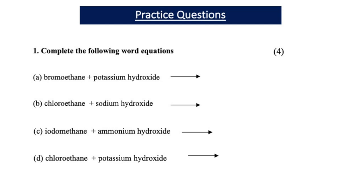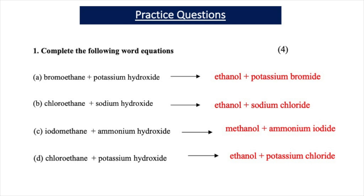Practice question 1 asks you to complete the following word equations. 1A: bromoethane and potassium hydroxide produces ethanol and potassium bromide. 1B: chloroethane and sodium hydroxide produces ethanol and sodium chloride. 1C: iodomethane and ammonium hydroxide produces methanol and ammonium iodide. 1D: chloroethane and potassium hydroxide produces ethanol and potassium chloride. There is one mark for each correct answer.